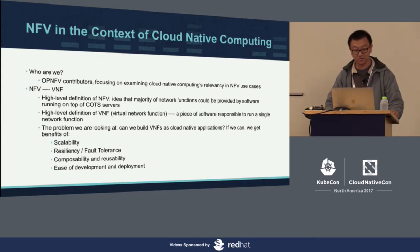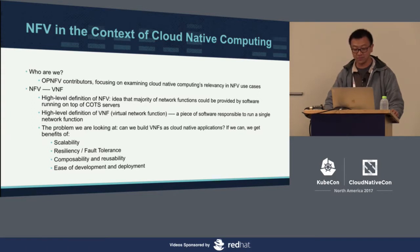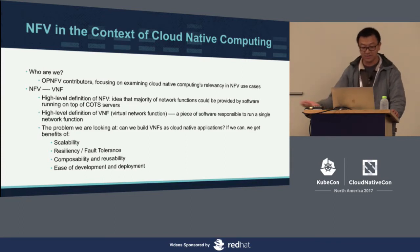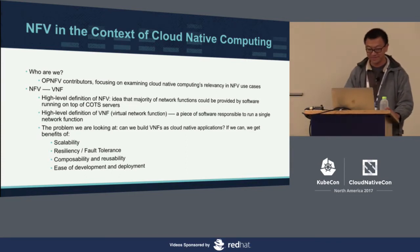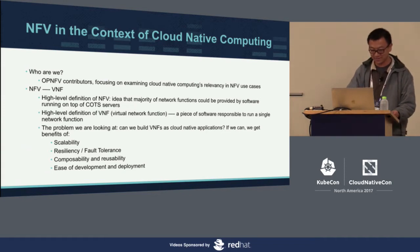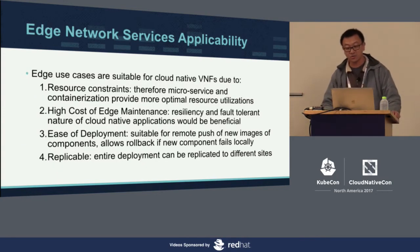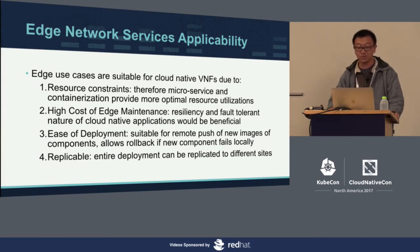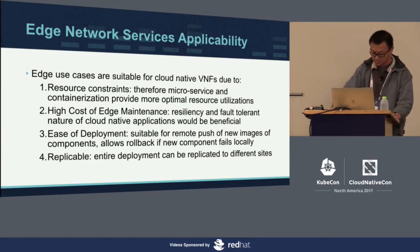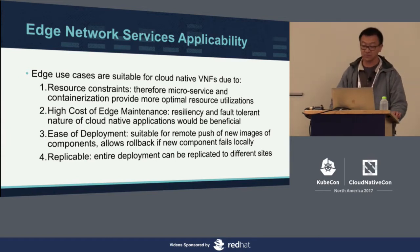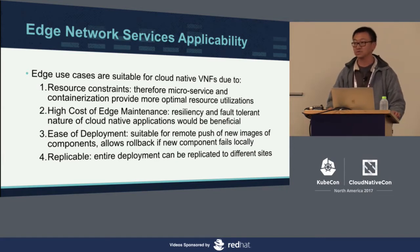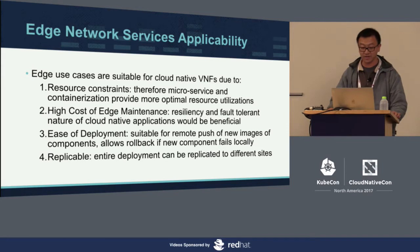For our OPNV contributors team at Huawei, for the last several months we've been focusing on whether or not we can build VNFs as cloud-native applications. The obvious benefits are there — I don't want to insult the audience given the venue. And if you are able to build a cloud-native VNF, we think it is actually very suitable for edge network use cases. The nature of elasticity for cloud-native applications allows you to optimally utilize resources, which is good for edge cases where resource constraints are much greater.